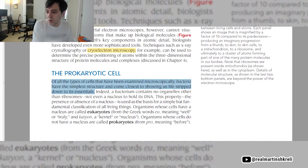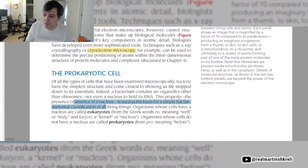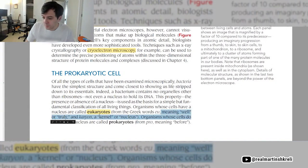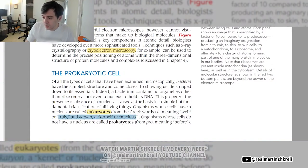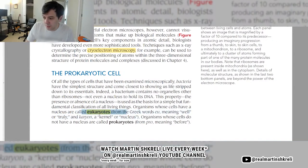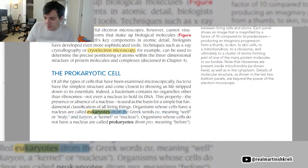A bacterium contains no organelles other than ribosomes, not even a nucleus to hold its DNA. So these bacteria don't have nuclei. This property, the presence or absence of a nucleus, is used as the basis for a simple but fundamental classification of all living things. Organisms whose cells have a nucleus are called eukaryotes. Eu means well or truly in Greek. Karyon means nucleus. Eu comes up in a lot of different sciences and other words like euphemism.